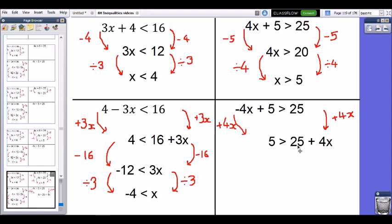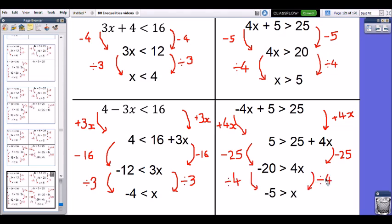Okay, so that 25 has no reason to be there, so let's subtract 25 from both sides. 5 take away 25 takes me all the way down to negative 20. How do I get from 4x to just x on its own? Well, I'm going to divide by 4, which tells me that x must be less than negative 5, and that is my solution.